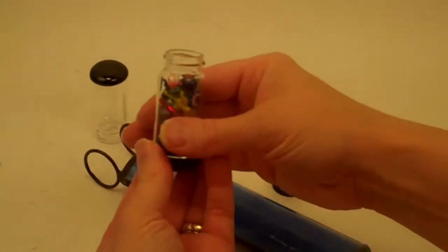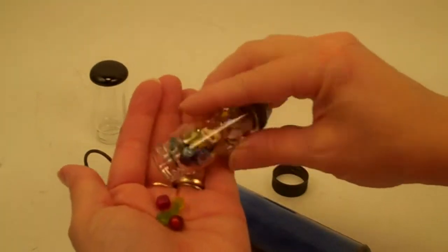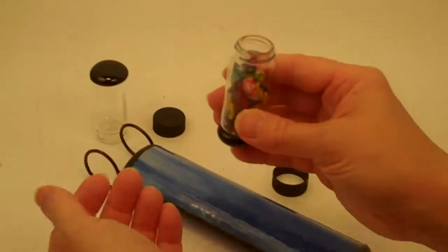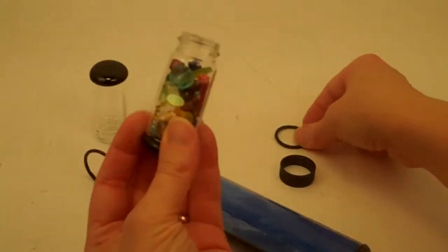You can empty some of the beads out, you can add other trinkets, if you find tiny seashells on the shore, you can add those.